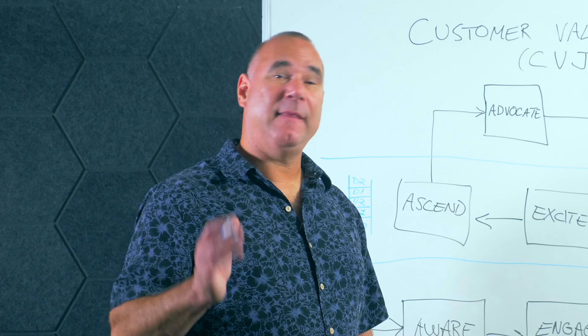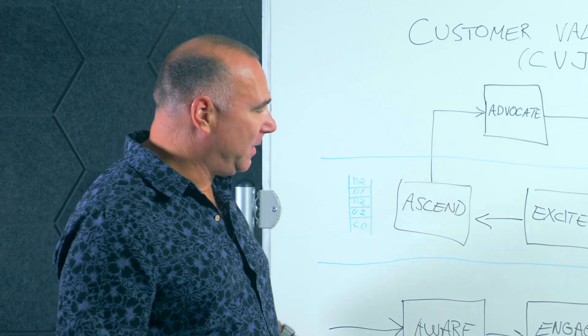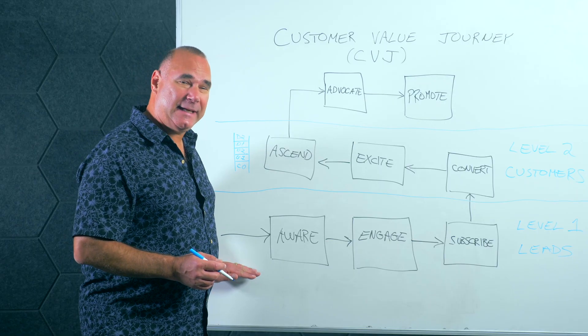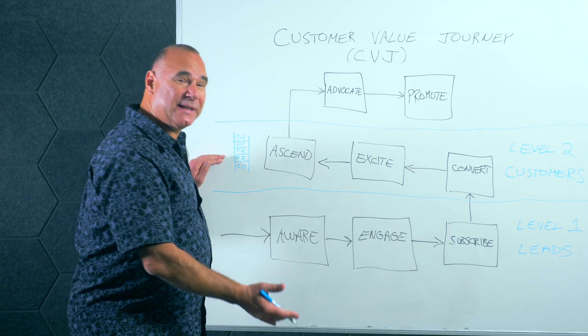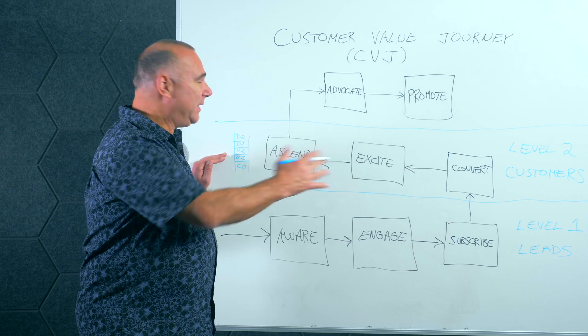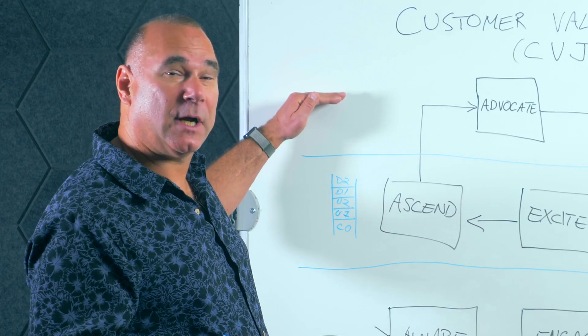In the last few videos, we talked about an overview of the CVJ. We covered getting leads at Level 1 of the Customer Value Journey, and then we talked about converting those leads into customers at Level 2 and ascending them through your value ladder.